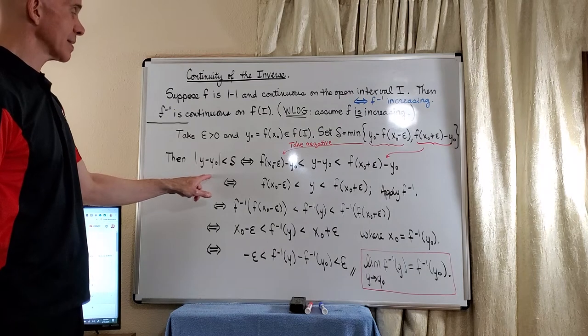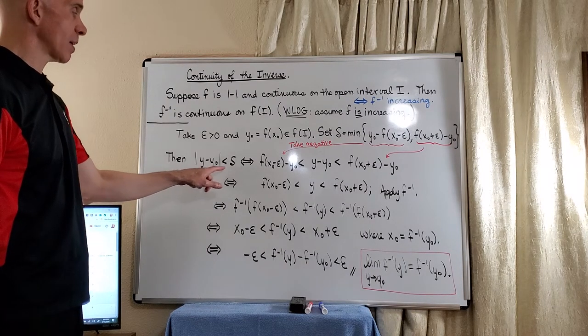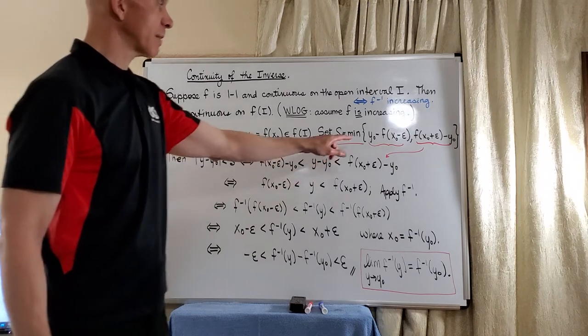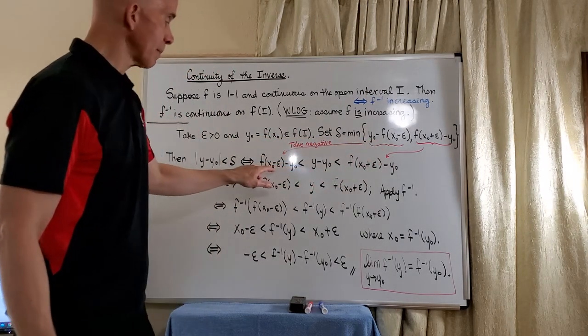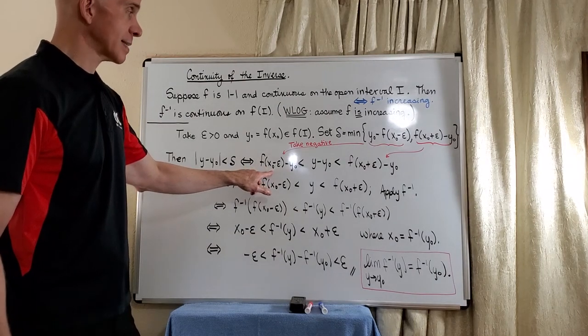So now, if we have this—that is, the absolute value of y minus y-naught is less than delta—by our definition here, we can take the negative of this number and place it here to get a number that is less than zero.